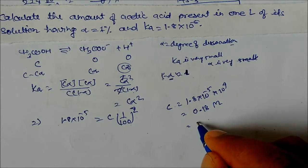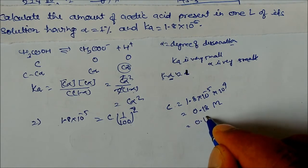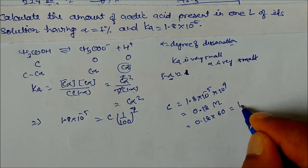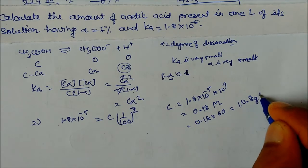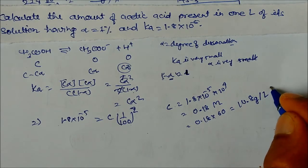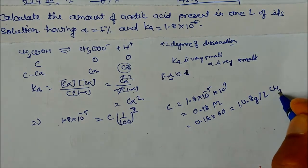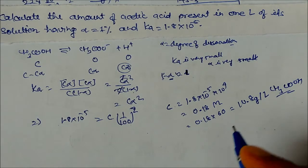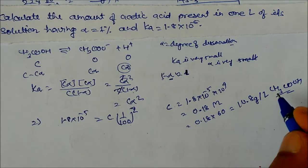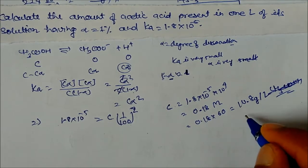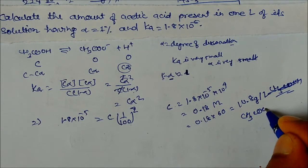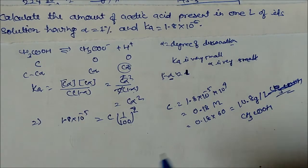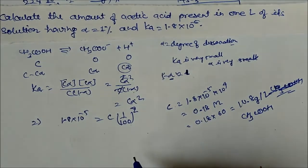So with 0.18 molarity, we multiply by the molar mass of acetic acid which is 60 g/mol: 0.18 × 60 = 10.8 grams per liter of acetic acid. So this is the answer.